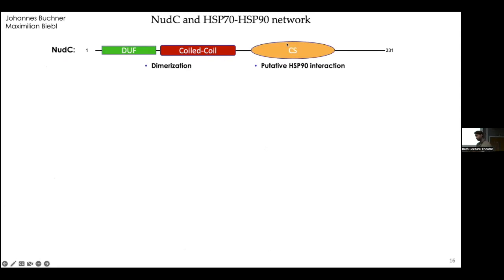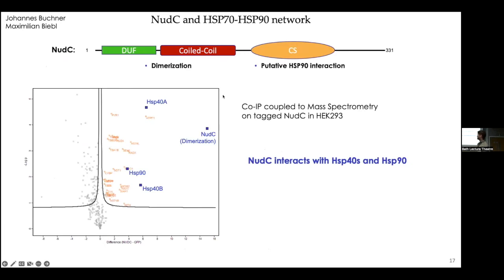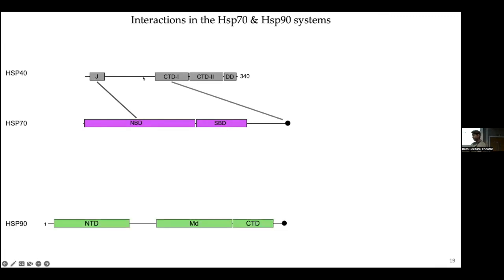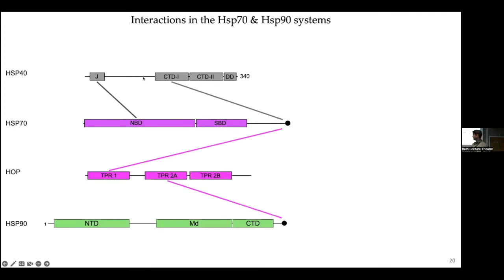To understand more, our collaborators performed co-immunoprecipitation with this protein. The partners found were NUTC itself — not surprising as it's a dimerizing protein — but they also found HSP40s and HSP90, showing a clear link between NUTC and the HSP90 and HSP70 systems. So to summarize: we have HSP40s interacting at two points with HSP70, HSP90 connected via HOP that interacts simultaneously with the C-terminal domains of HSP90 and HSP70, and we want to understand where NUTC sits within this network.